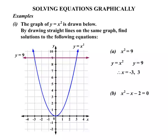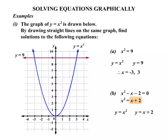Part b: we need to solve x squared minus x minus 2 equals 0. We have the graph of y equals x squared, so we need to isolate the x squared first. We take everything else to the other side, changing signs: minus x becomes plus x, and minus 2 becomes plus 2. So we're considering the graph of y equals x squared, and the other graph y equals x plus 2, finding when these two graphs meet.